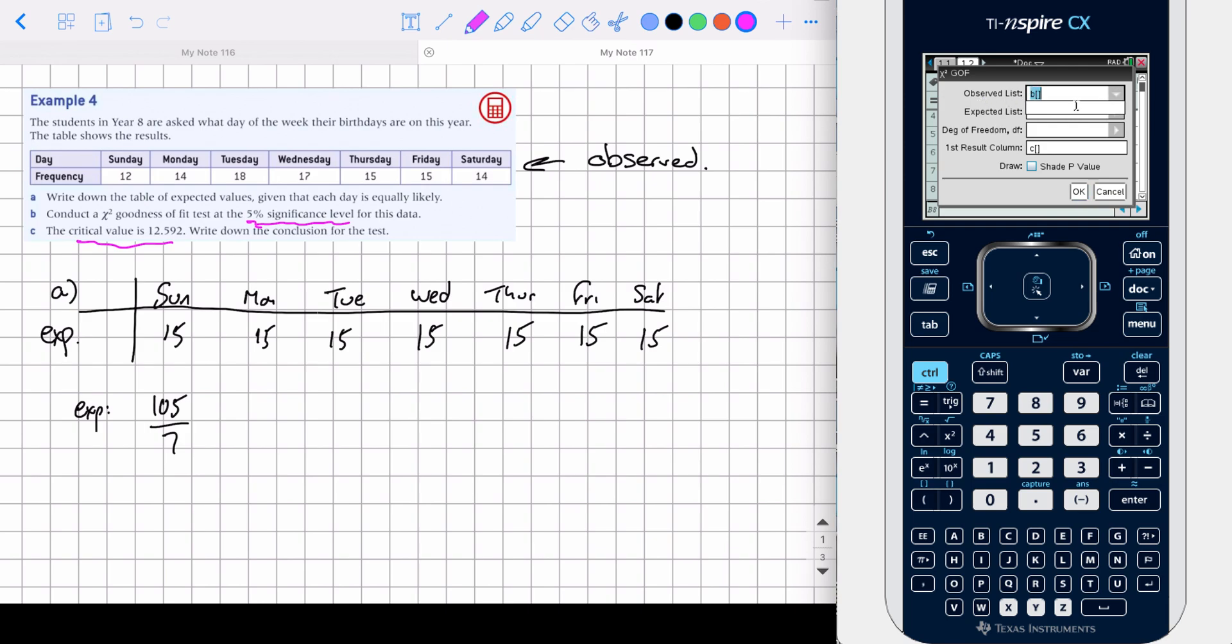Then it says, right, where did you put your observed data? Well, we put that in a column. Obviously, I didn't name my column, so I haven't got anything in the drop-down list. Where's my expected values? Well, I've had to calculate those, and that's in the second column, and we want our first result column to be in C. Let's click OK.